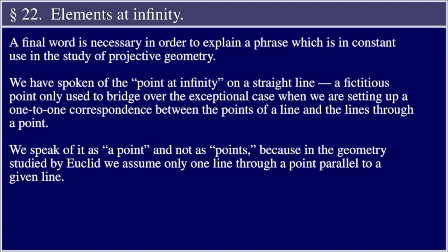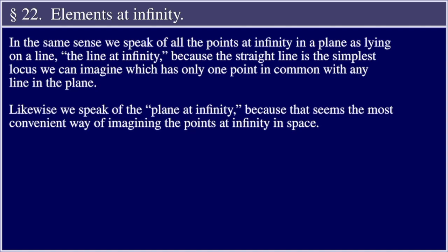Section 22, Elements at infinity. A final word is necessary in order to explain a phrase which is in constant use in the study of projective geometry. We have spoken of the point at infinity on a straight line, a fictitious point only used to bridge over the exceptional case when we are setting up a one-to-one correspondence between the points of a line and the lines through a point. We speak of it as a point and not as points because, in the geometry studied by Euclid, we assume only one line through a point parallel to a given line. In the same sense, we speak of all the points at infinity in a plane as lying on a line, the line at infinity, because the straight line is the simplest locus we can imagine which has only one point in common with any line in the plane. Likewise, we speak of the plane at infinity because that seems the most convenient way of imagining the points at infinity in space.